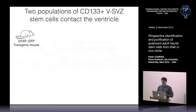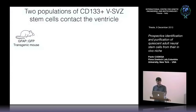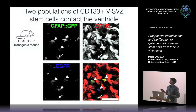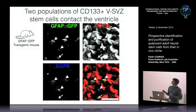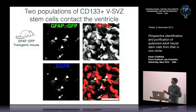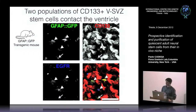When we looked at whole mounts taken from a GFAP-GFP transgenic mouse, which has GFP positive cells under the GFAP promoter, we found that CD133 was highly expressed on the cilia of ependymal cells, but also expressed by some GFAP positive cells. Some of those GFP positive cells also expressed EGF receptor, meaning there are at least two populations of CD133 positive stem cells contacting the ventricle: some expressing EGF receptor and some not.